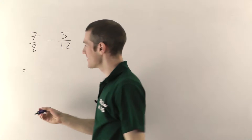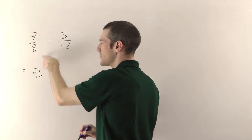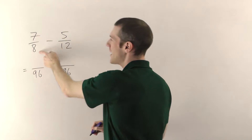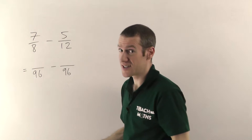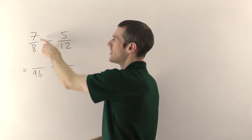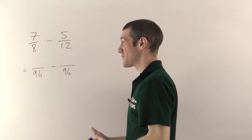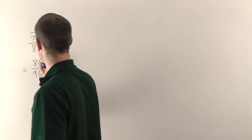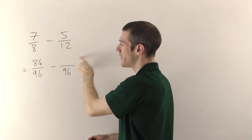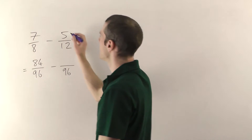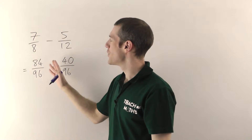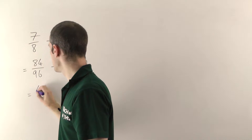We want to rewrite 7 eighths as something over 96, minus 5 twelfths as something over 96. 8 goes into 96 twelve times, so we times the 7 by 12 as well — 7 times 12 is 84. 12 goes into 96 eight times, so whatever you times the bottom by, you must times the top by the same thing — 5 times 8 gives 40. Now I can do the subtraction, working in 96ths: 84 minus 40 is 44 over 96.